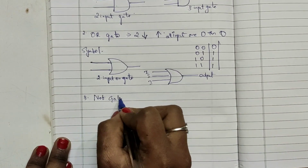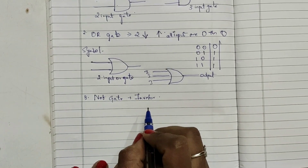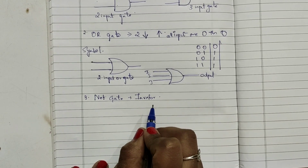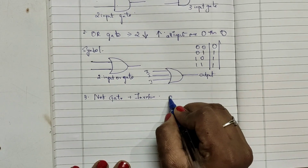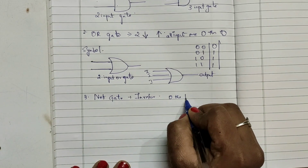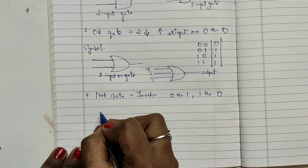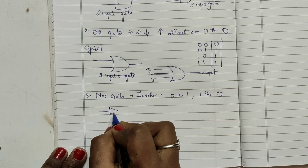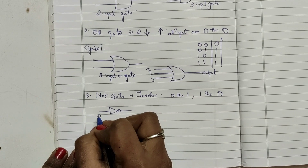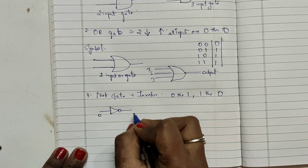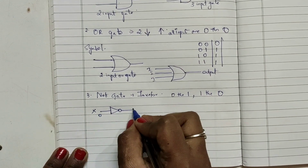NOT gate is also called an inverter. It is the gate with only one input and one output. The output is the complement of the input: if the input is 0 the output is 1, and if the input is 1 the output is 0. The symbol of NOT gate has one input and one output. For example, if you give variable x, the result would be x-bar.